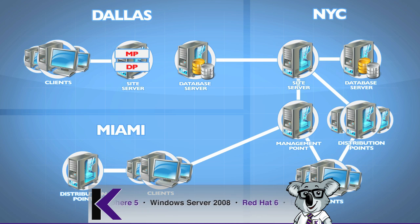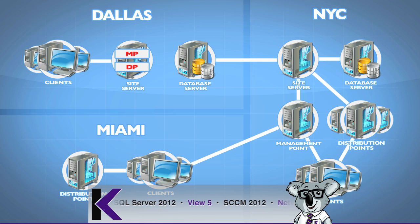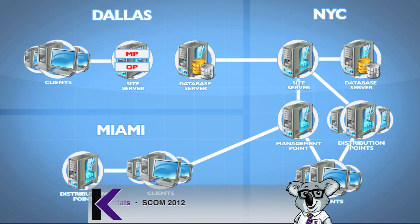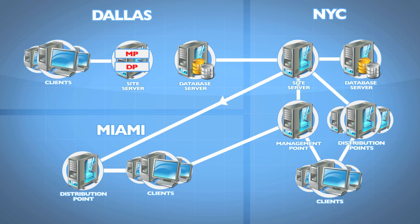That kind of communication is not much traffic — even with a thousand users, very small amounts of data are transferred back and forth. However, the heavy traffic we want to control bandwidth on is what goes to the distribution points. From the central primary site system, we can replicate those large packages to the distribution point, doing so by throttling the bandwidth and controlling the schedule of when that information goes out.